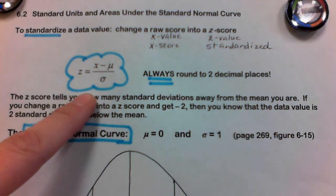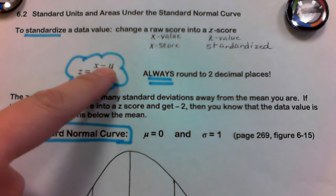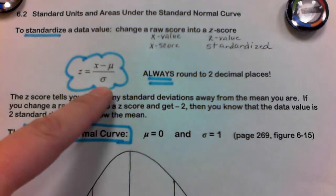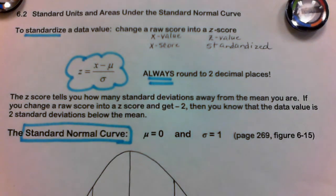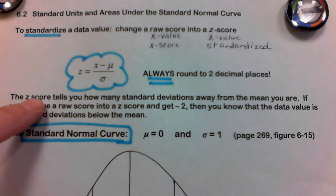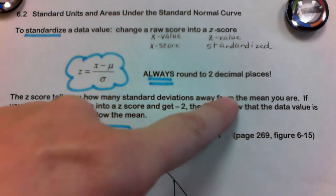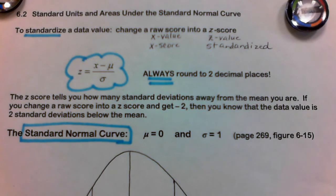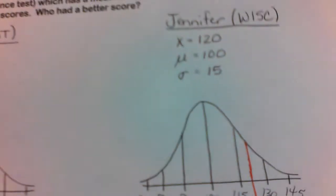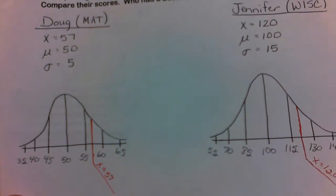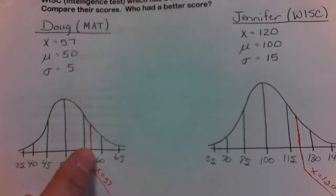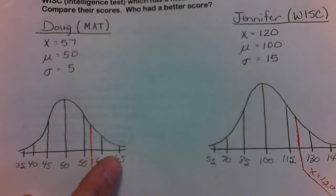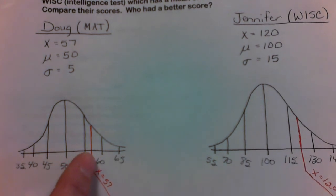Here's the formula: Z equals X minus mu divided by sigma. Always round to two decimal places. The Z score gives us how many standard deviations away from the mean you are. Looking at Doug, I know he is one and part of another standard deviation away, so when I calculate his Z value, I should get one point something.